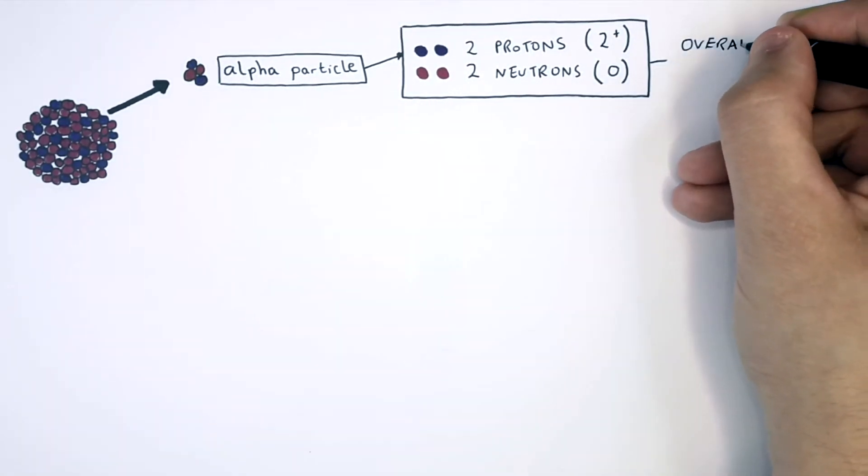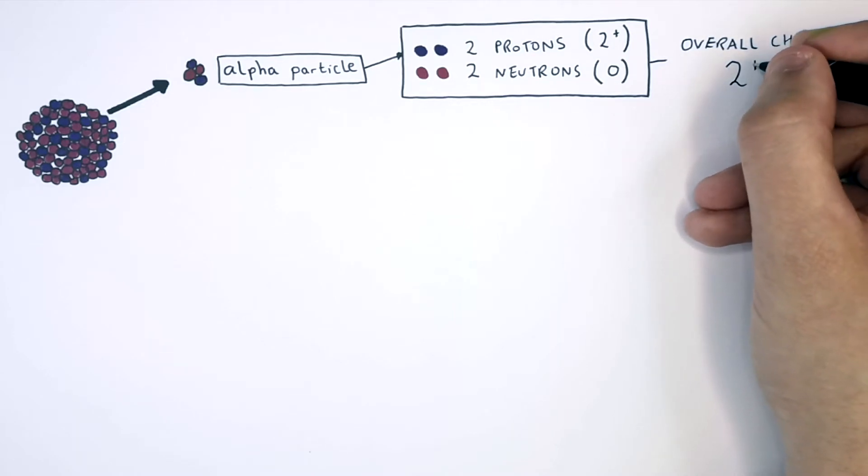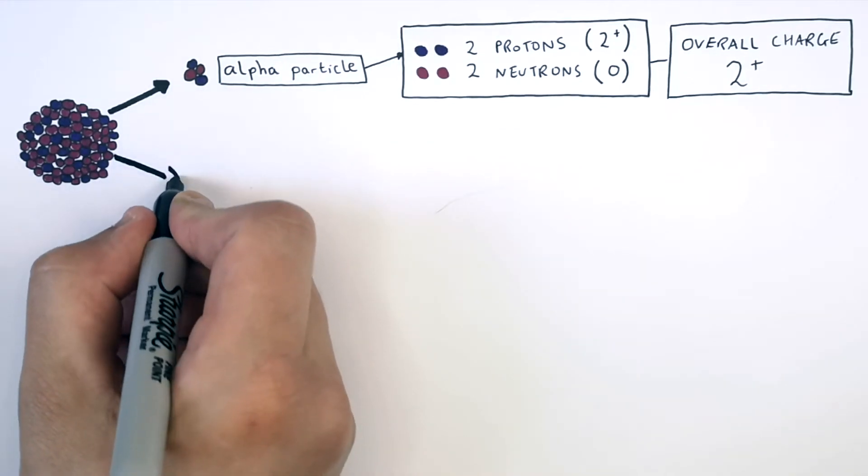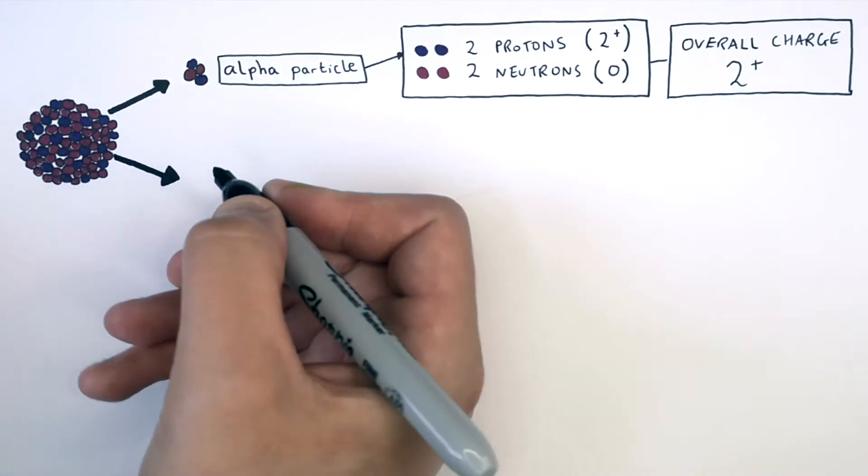So the overall charge of an alpha particle is plus two. And the relative mass of an alpha particle is four, because it's got two protons and two neutrons. So we saw that an alpha particle is the emission of two protons and two neutrons.